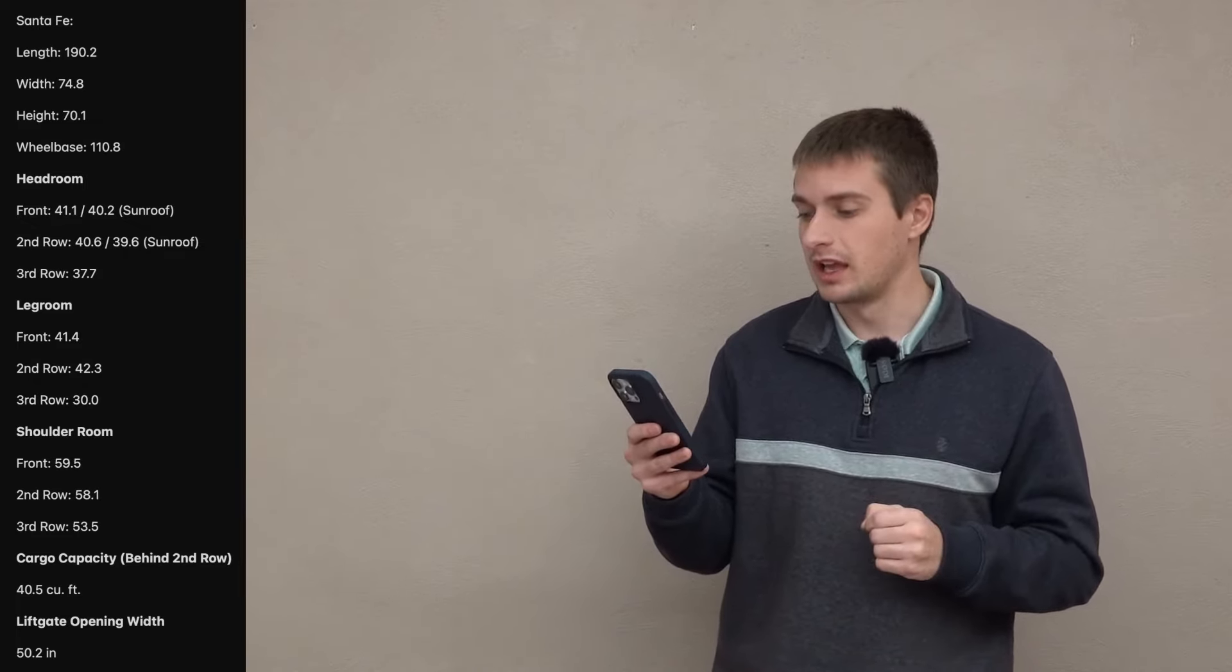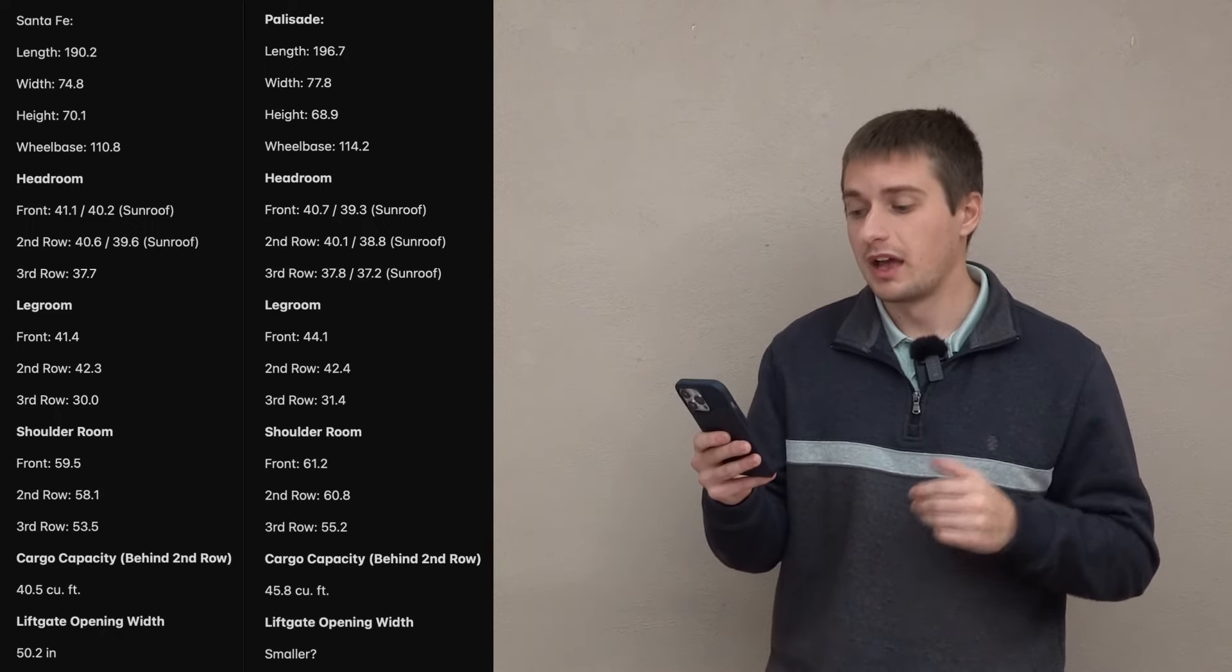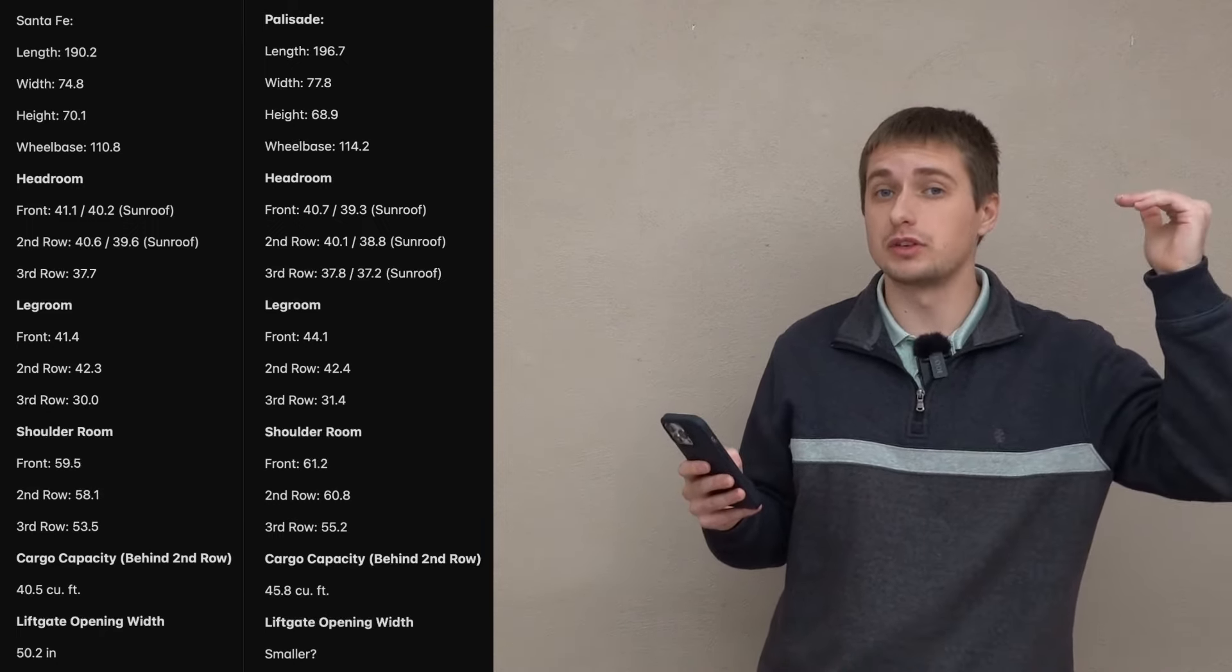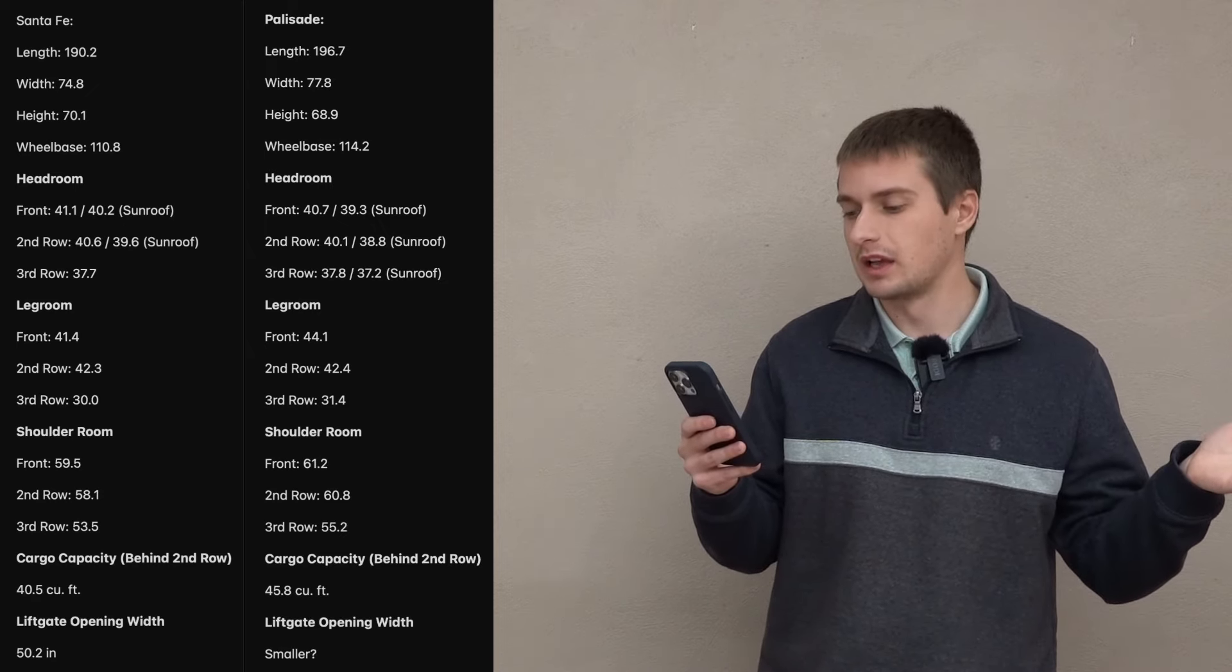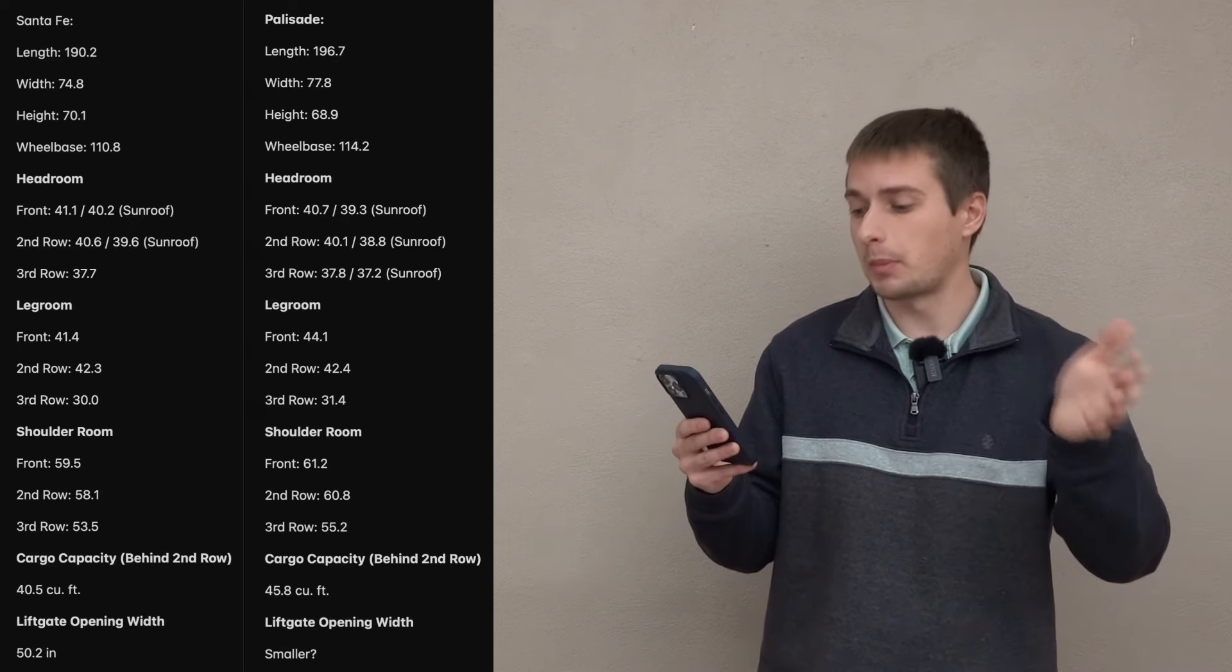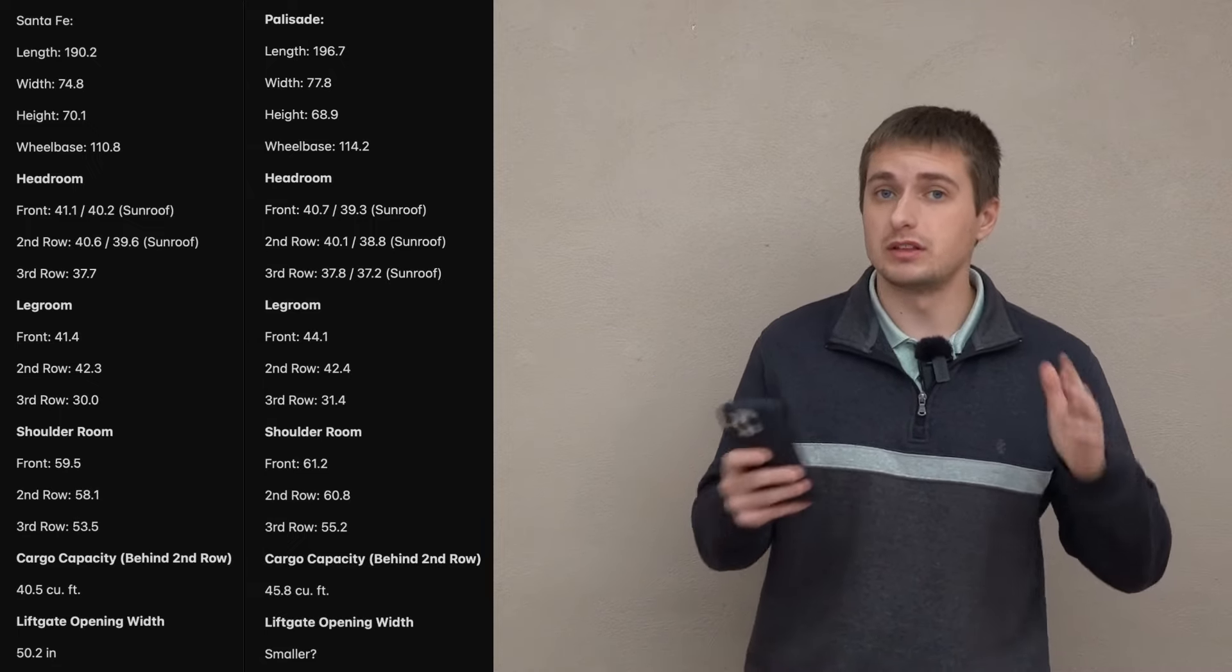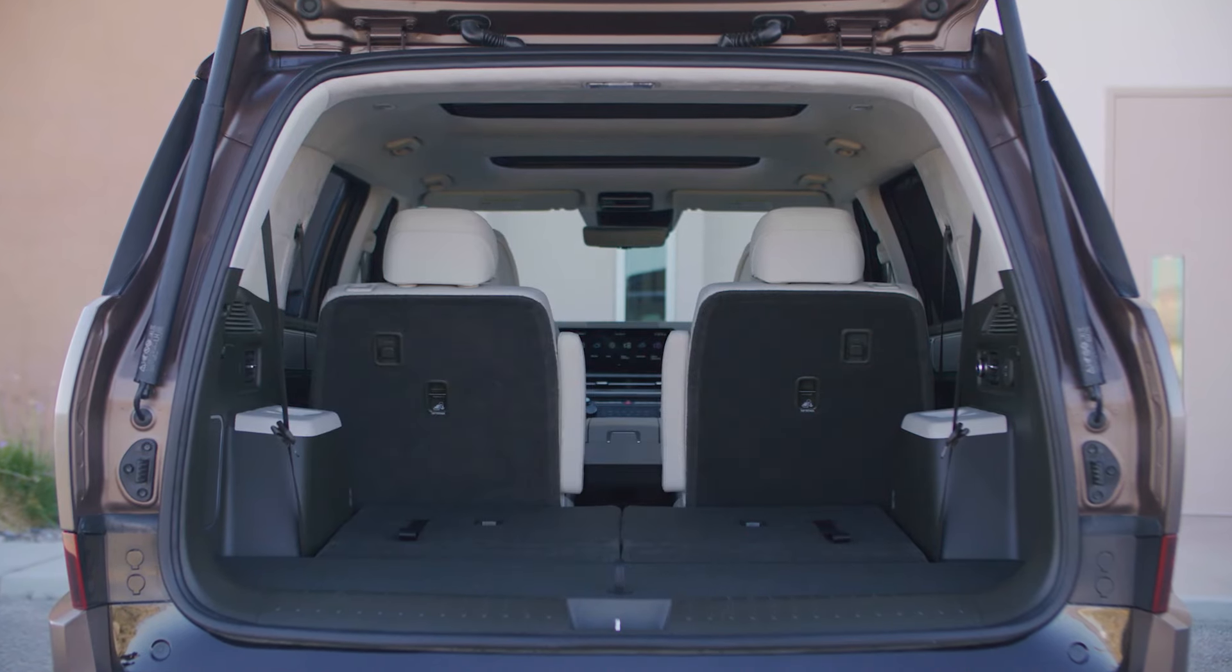Now, next up, moving on to the size of each of these two vehicles, before we wrap up with pricing, this is actually a very interesting aspect because the Santa Fe grew in size over the previous generation and now offers a third row where before it previously did not. So the Santa Fe is going to come in at 190.2 inches long, 74.8 inches wide, and 70.1 inches tall with a wheelbase of 110.8 inches. Now, I'll go ahead and put all the dimensions in each respective vehicle up on the screen so you guys can kind of compare them side by side while I look through them myself. You're basically going to get a larger vehicle all around in every dimension on the inside in the Palisade except for headroom and headspace. The Santa Fe is just a little bit more of a boxier, taller design vehicle, so it will eke out the Palisade in headroom in all three rows versus that of the Palisade.